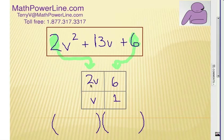So, then what I do is I multiply across. 2v times 6 and v times 1. So that's going to give me 12v right here and 1v right here. And again, I know I have to add these together, so that is going to work. 12v and 1v gives me 13v. So I happen to get it right on the first guess.